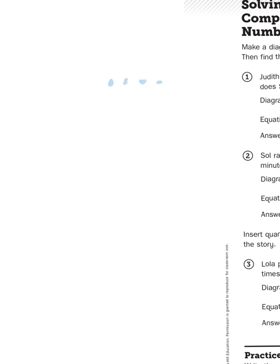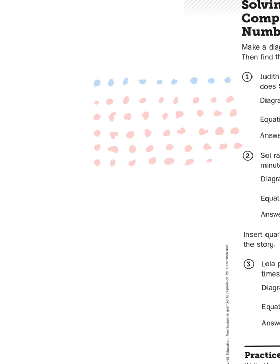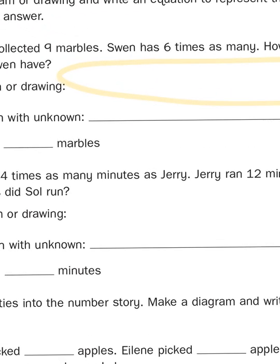Judith has nine marbles — one, two, three, four, five, six, seven, eight, nine. Swen has six times as many, so that means I'm going to make six rows of nine marbles. That's going to show me the size of Swen's marble collection compared to Judith's. The blue row represents Judith's amount compared to Swen's amount, which is the entirety of this array — six rows with nine in each row. The equation would be nine times six equals M for marbles.